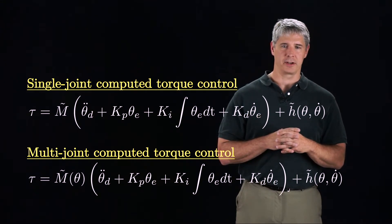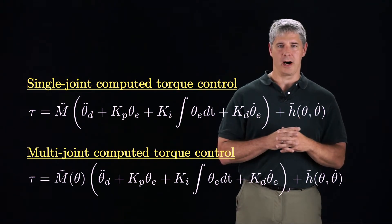H tilde is a vector of Coriolis, gravity, and possibly friction terms. M tilde is a model of the robot's configuration-dependent mass matrix.